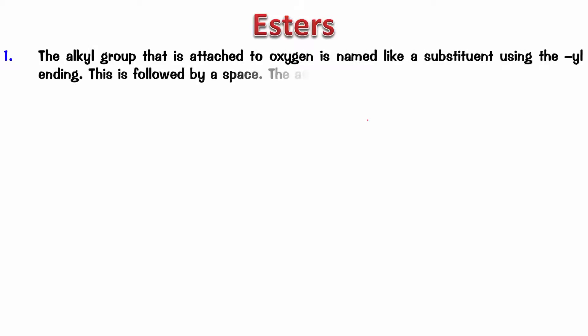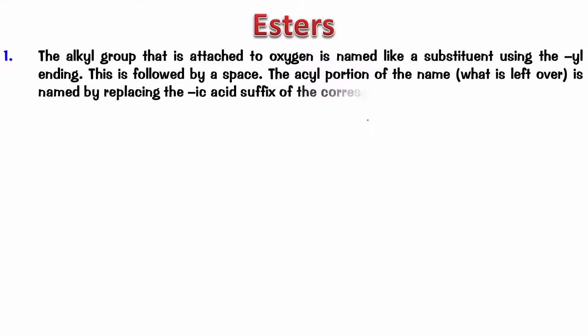So the first rule: the alkyl group that is attached to the oxygen is named like a substituent using the yl ending. This is followed by a space. The acyl portion of the name, that is whatever is left over, is named by replacing the ick acid suffix of the corresponding carboxylic acid with ate.